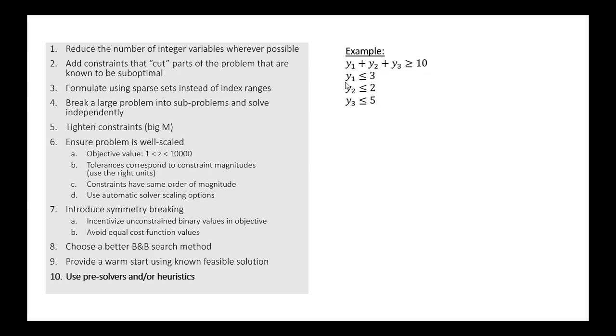And the second constraint is that y1 has to be less than or equal to 3, y2 has to be less than or equal to 2, and y3 has to be less than or equal to 5. So if we just look at this set of constraints, you'll notice that there's only one feasible solution to all of these four sets of constraints.